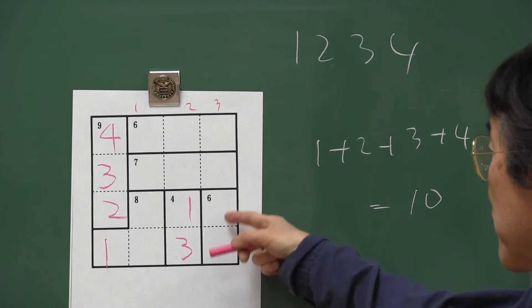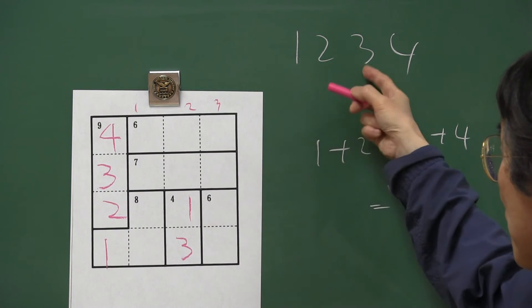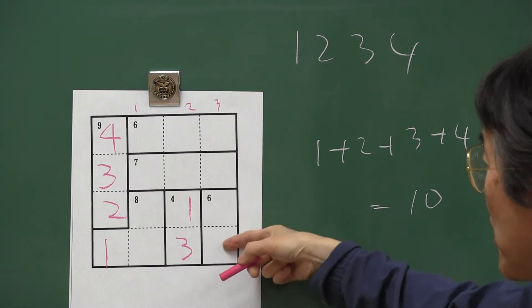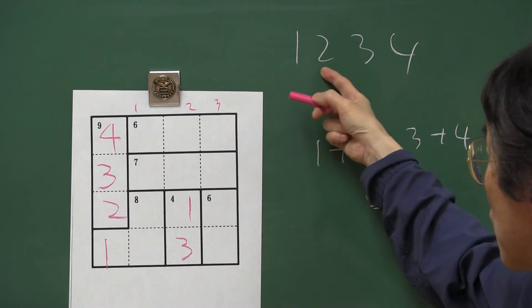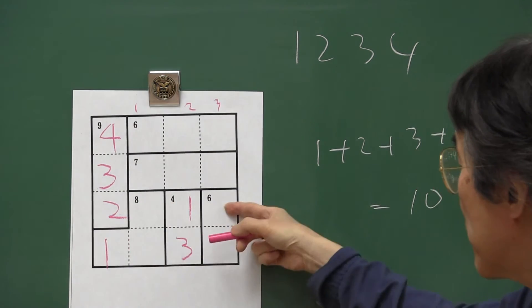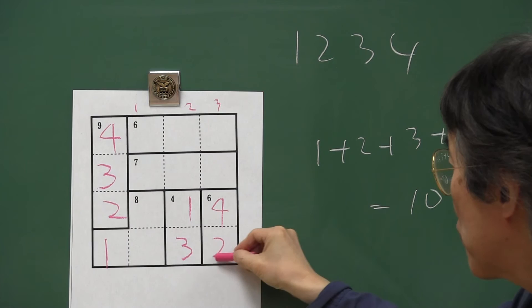Next, two numbers make six. You can use one, two, three, four. Three and three is against the rule. Then two and four. Here is two, then four, two.